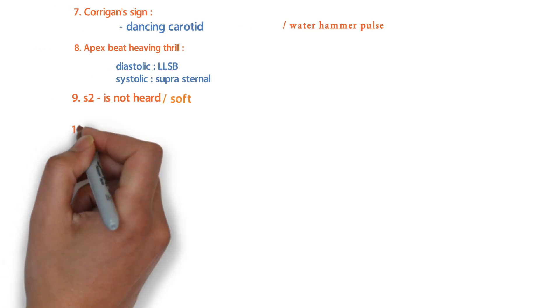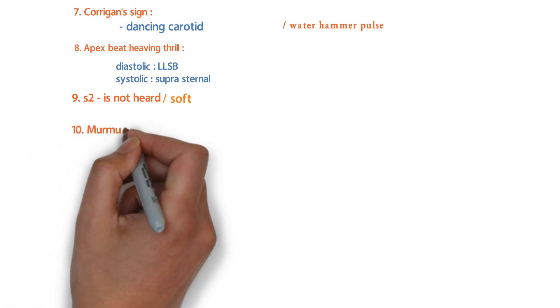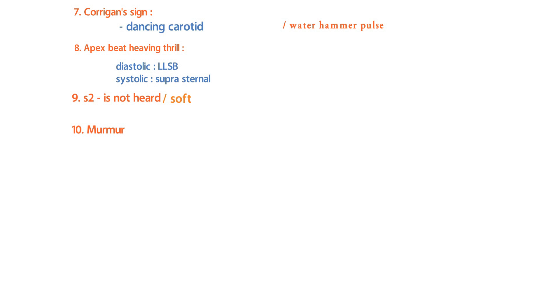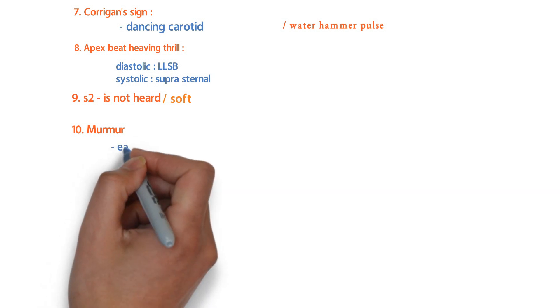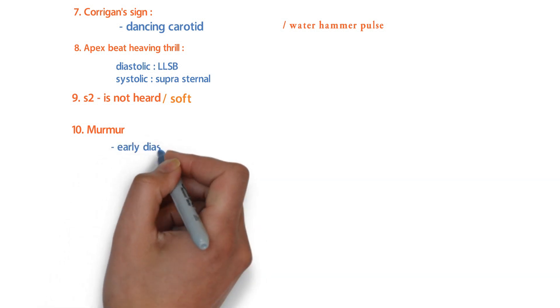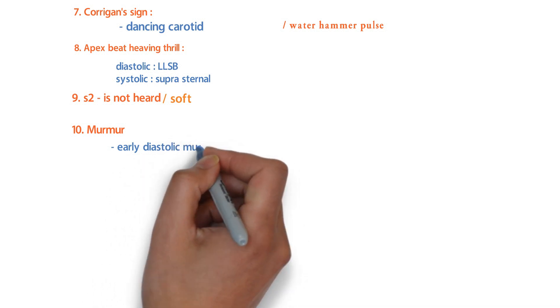The next important finding is the murmur. Listening to the sound clip, the murmur heard in aortic regurgitation is an early diastolic murmur.